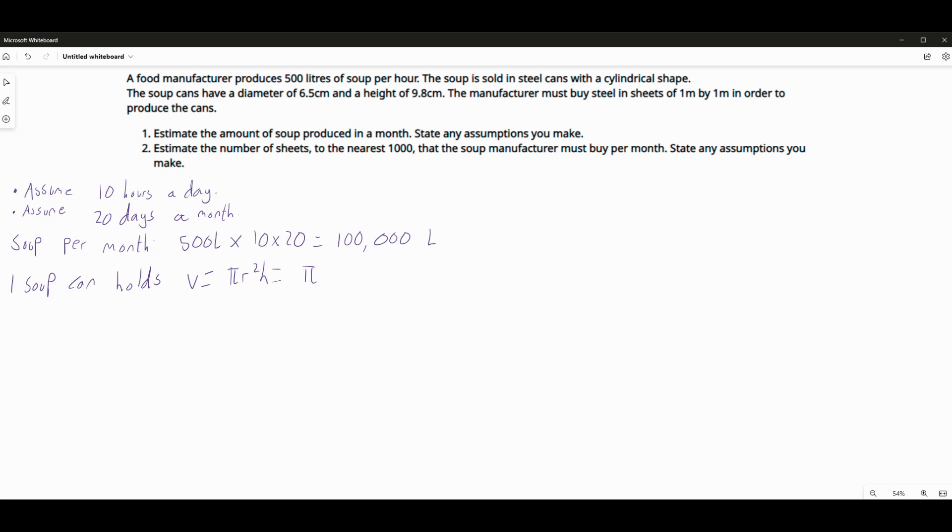So we know the radius is going to be half of 6.5, which is 3.25. And we know the height. So we'll work this out. I'll just round this here for simplicity. This is going to be 43 centimetres cubed.